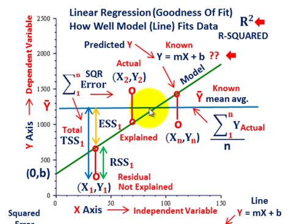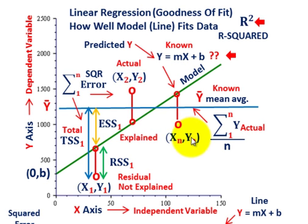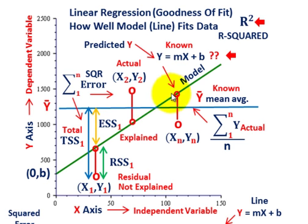We have to define what we know. Our model gives us the predicted value based on our slope and y-intercept. The other thing we need is the mean average. We take all our y data points — y1, y2, y3 through yn — sum them up and divide by the number of data points to get the mean average, y-bar. That's shown by the horizontal blue line passing through our data points as the average y value. The green line is our model; the blue line is our mean average.